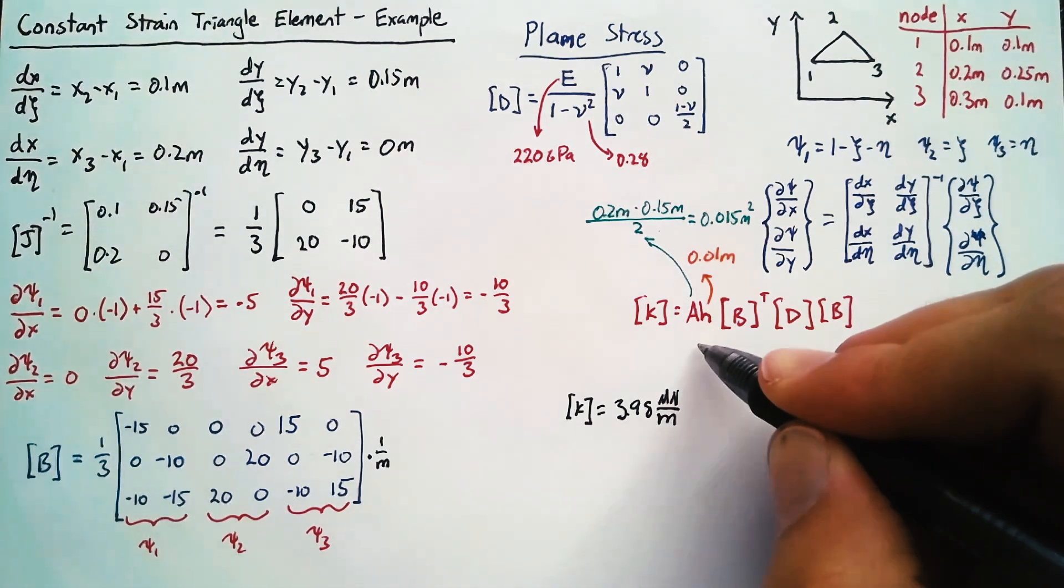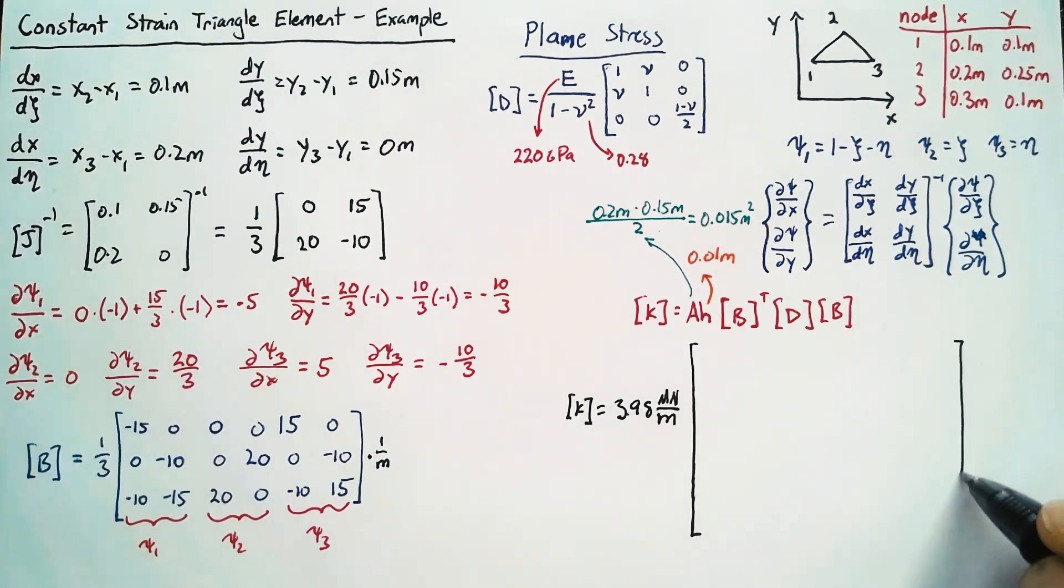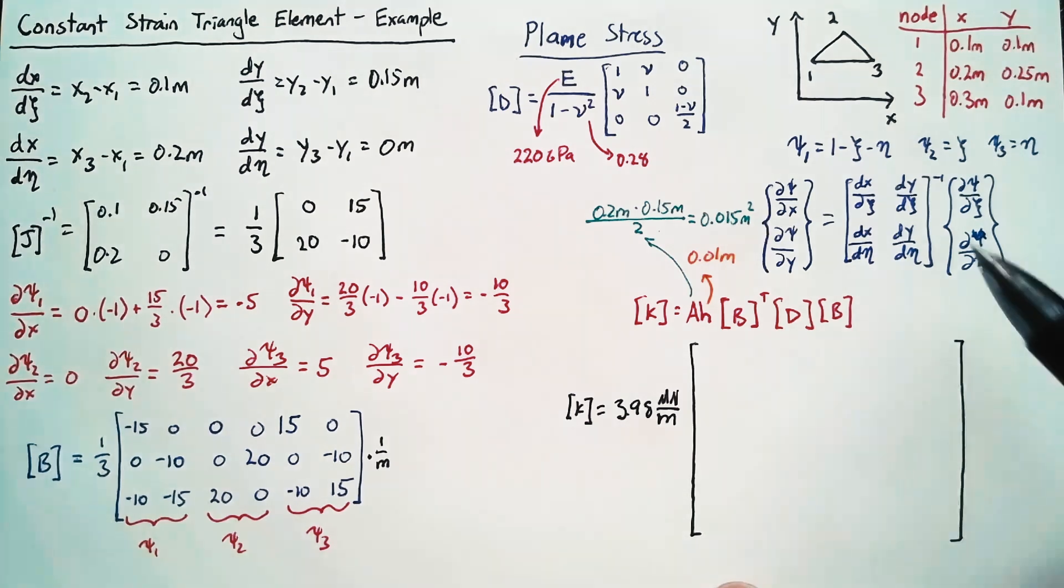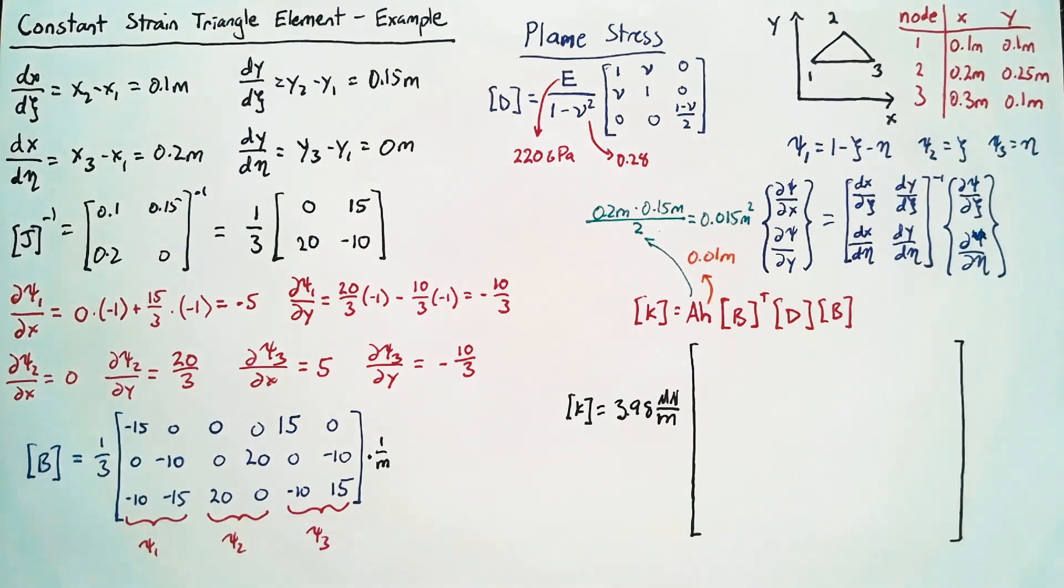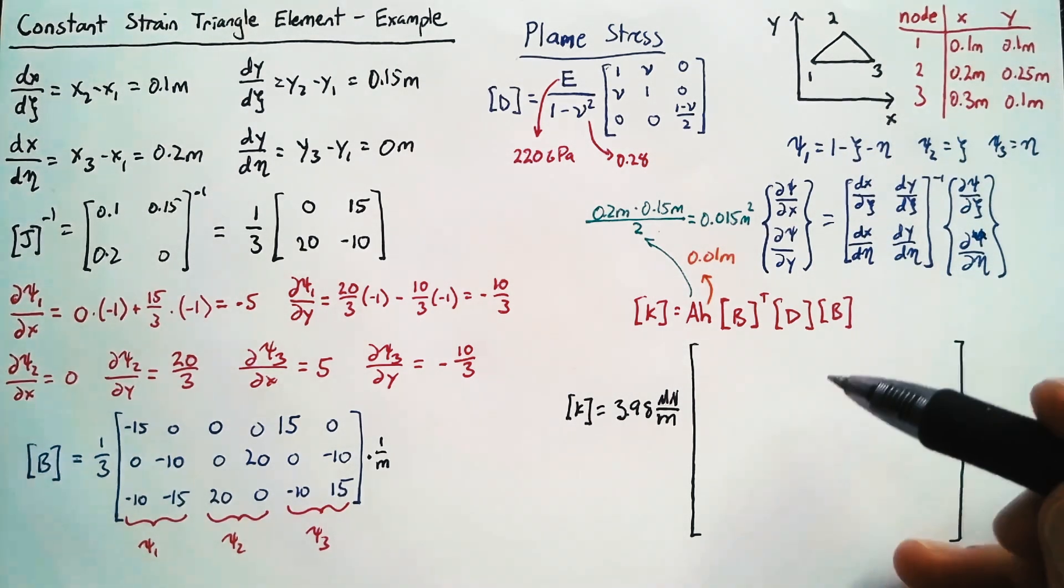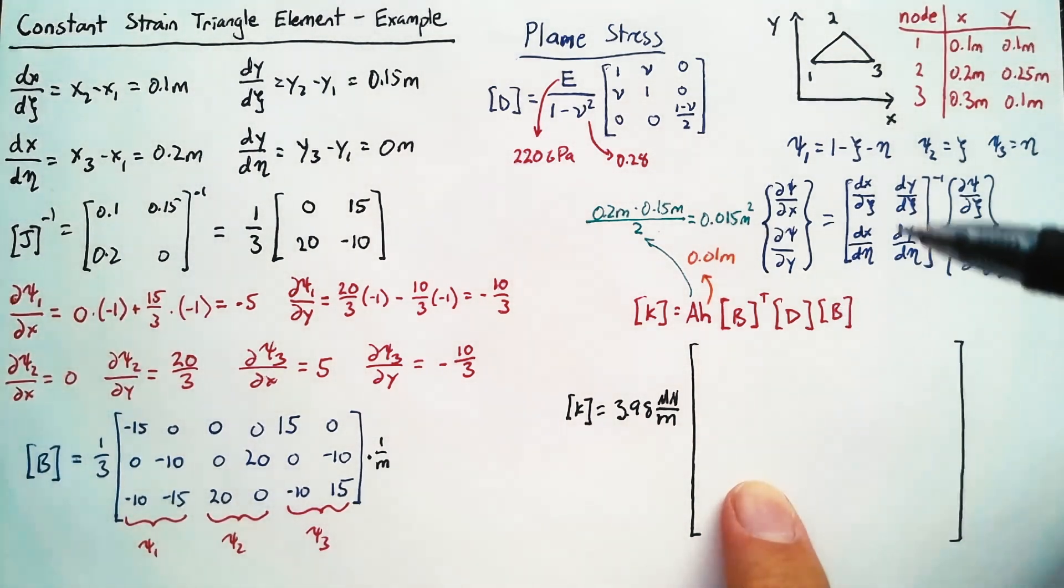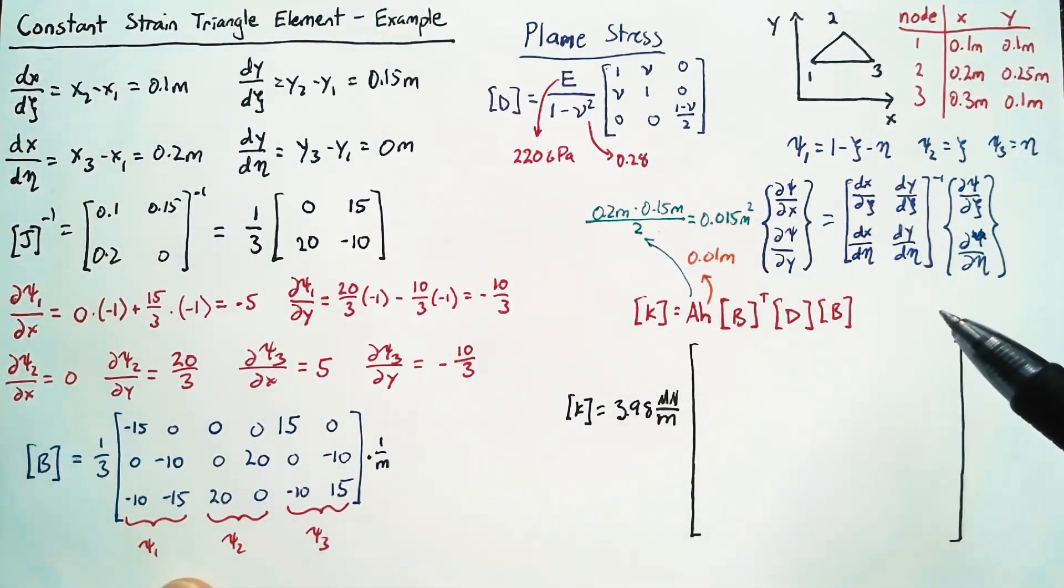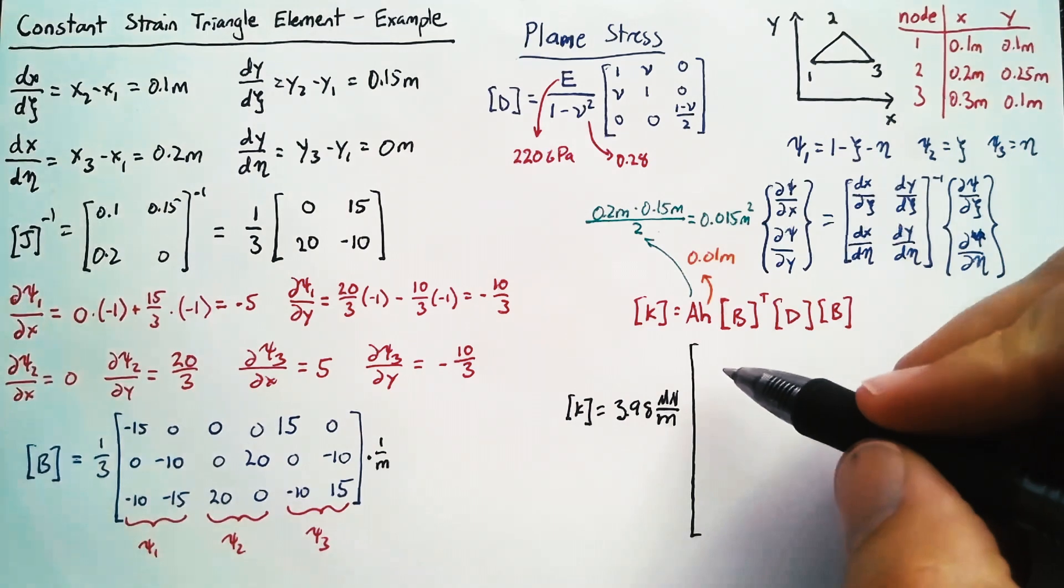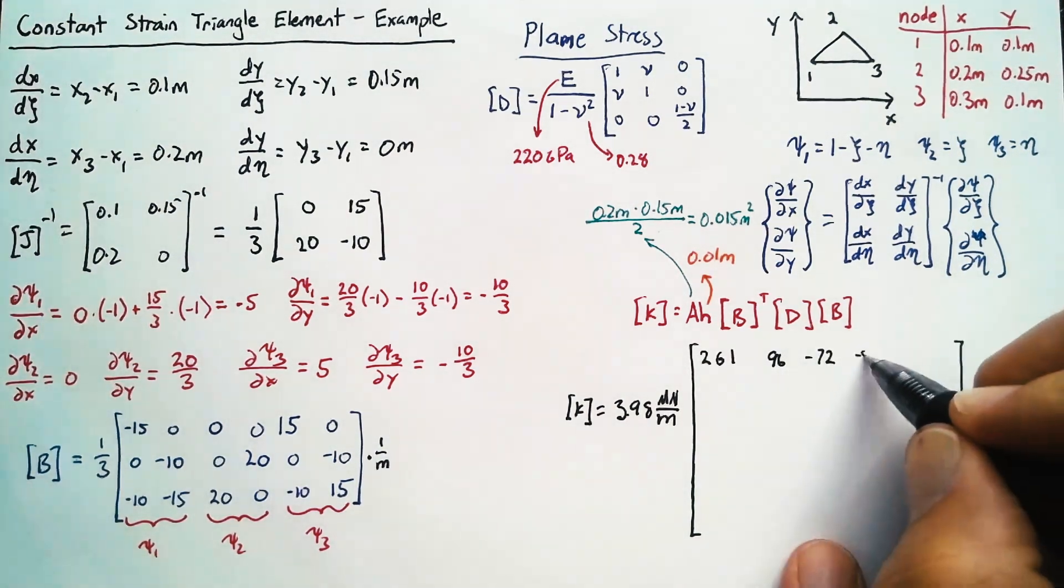And then this is going to be multiplied by a 6 by 6 matrix. Because what we're looking at are the 6 degrees of freedom of our elements here. We have U and V for each of our nodes. And what's inside of here are just numbers. Because we've already done the integration, and we've already done these derivatives. So everything is known now. So running through these values, we get 261, 96, etc.